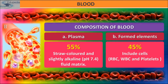The composition of blood includes two types: plasma and the formed elements. Formed elements are of three types — RBC, WBC, and platelets. Plasma is straw-colored and slightly alkaline in nature.